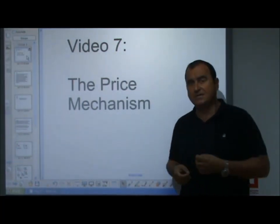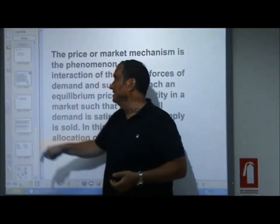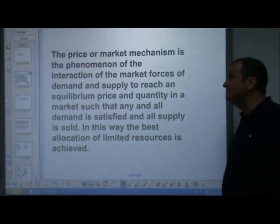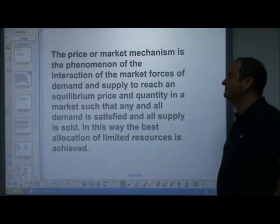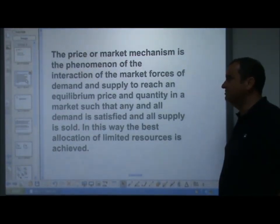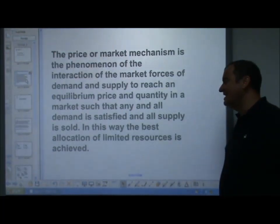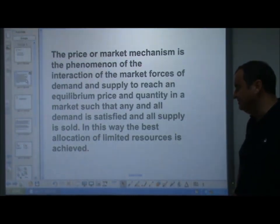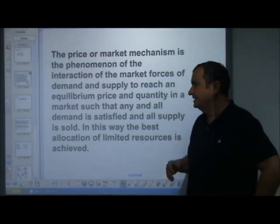Let's start with the definition. The price or market mechanism is the phenomenon of the interaction of the market forces of demand and supply to reach an equilibrium price and quantity in a market, such that any and all demand is satisfied and all supply is sold. In this way, the best allocation of limited resources is achieved.